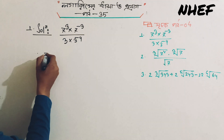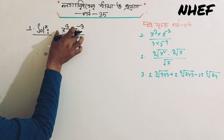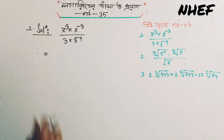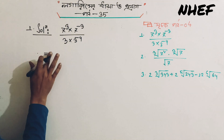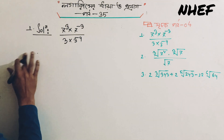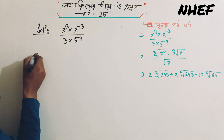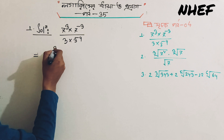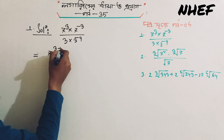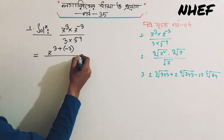So let's see. The base is 1 and the power is 0. So the base is 1 and the power is 0. We can write it as 7 to the 3 plus into minus 3 divided.